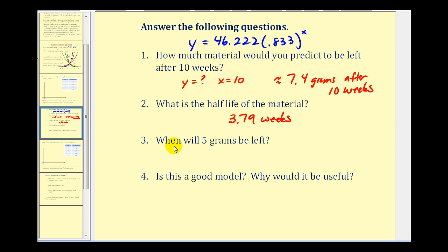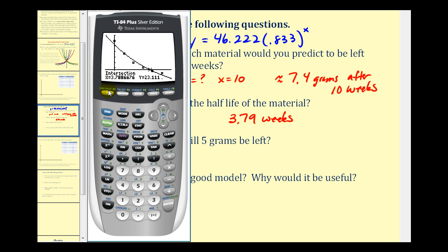Number three, when will five grams be left? Let's go back to the graphing calculator, press y equals, and now we'll replace 23.11 with five grams. And determine the point of intersection of these two functions. And notice we're not seeing y equals five, that's because that's the way we set up our window. So we're going to have to adjust the window to see that point of intersection.